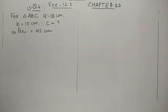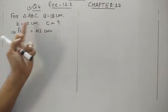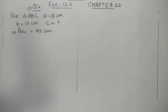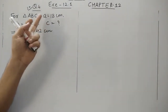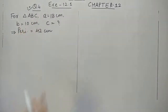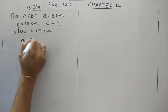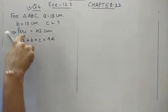Let us continue with this very interesting question. It is given that we have to find out the area of a triangle whose two sides are 18 and 10, and the perimeter is given. It is interesting because they have not given all 3 sides — only 2 sides and the perimeter.